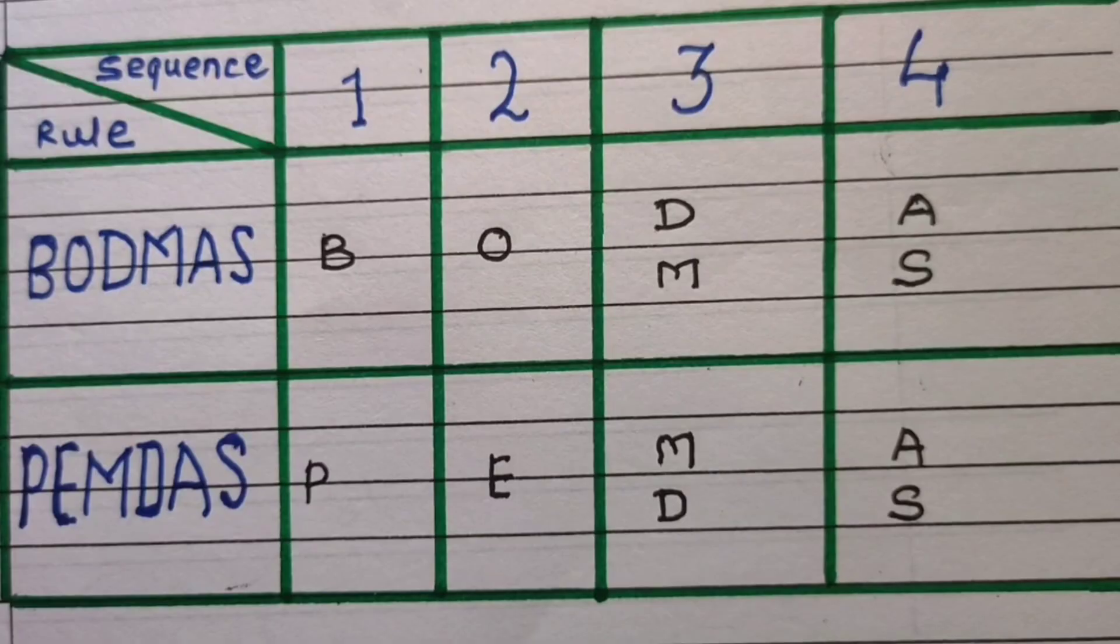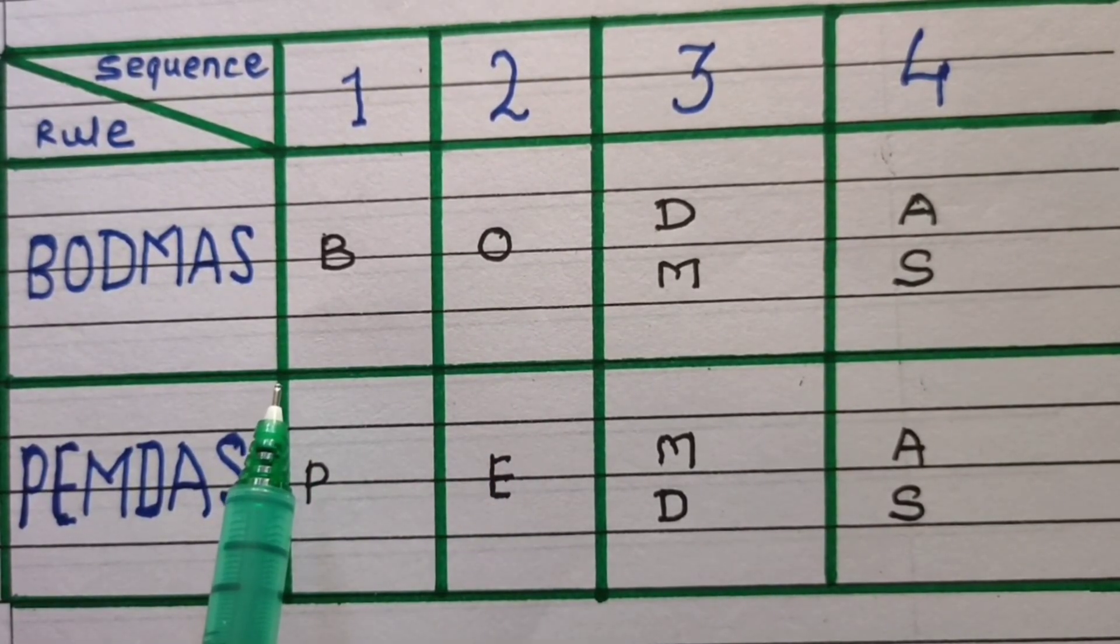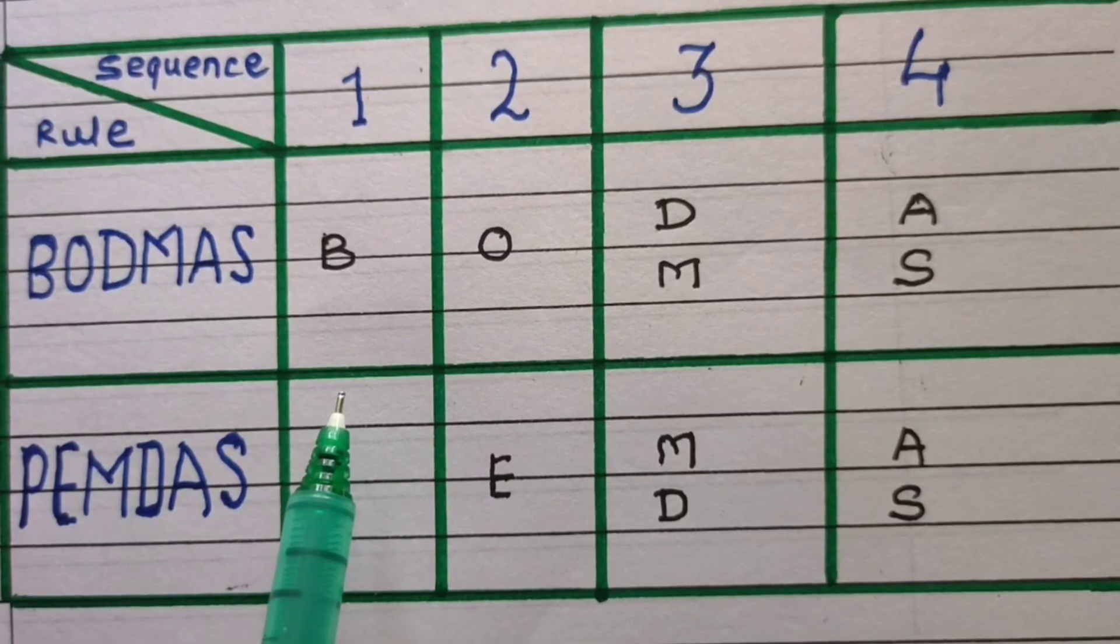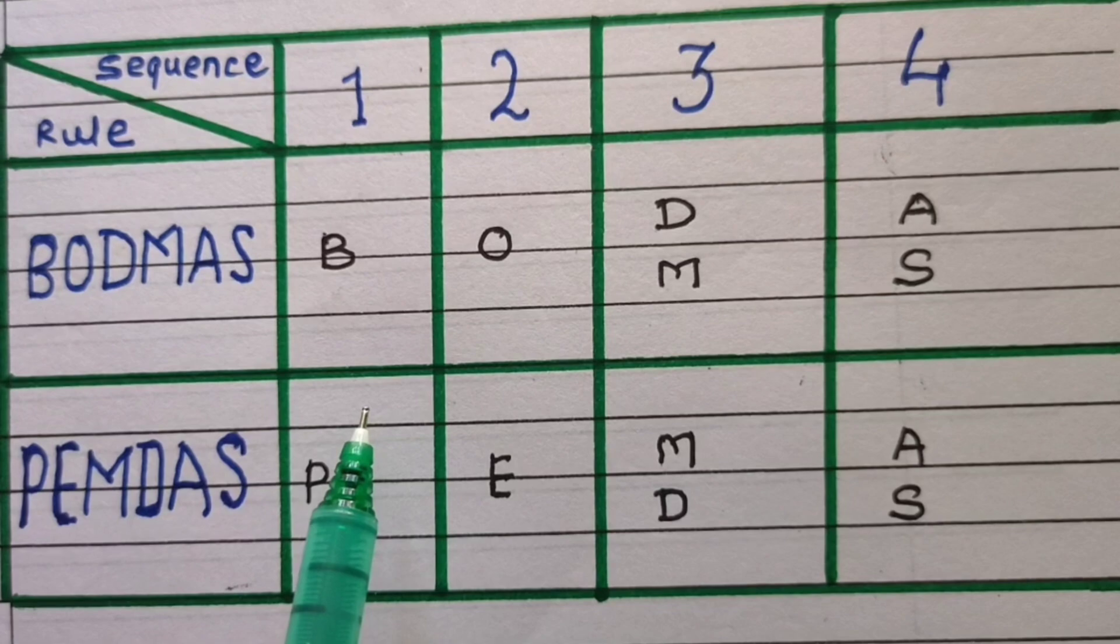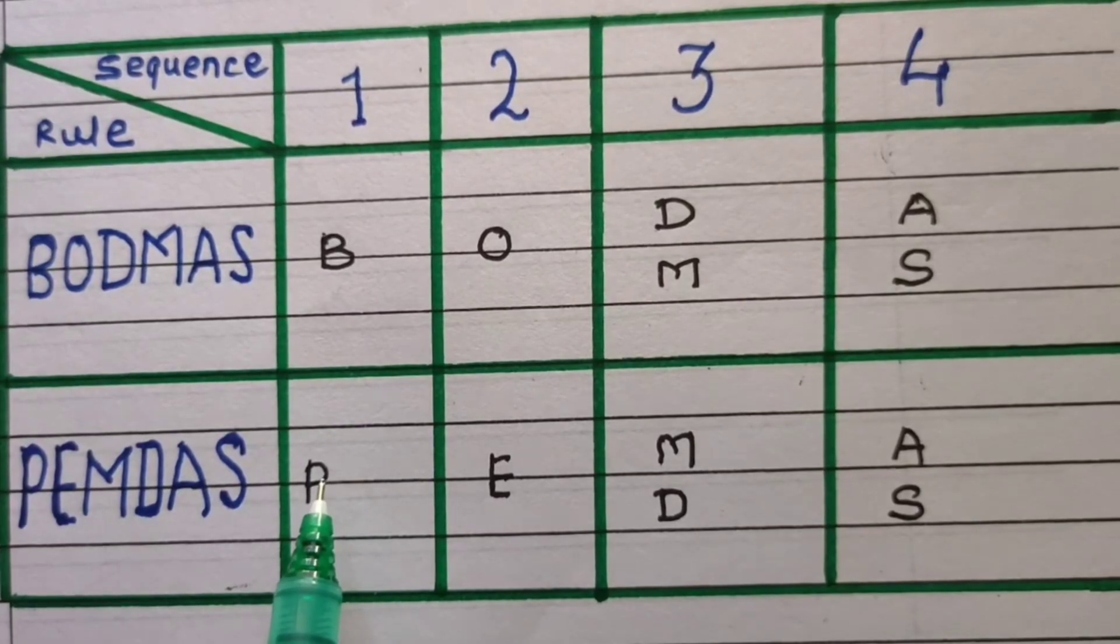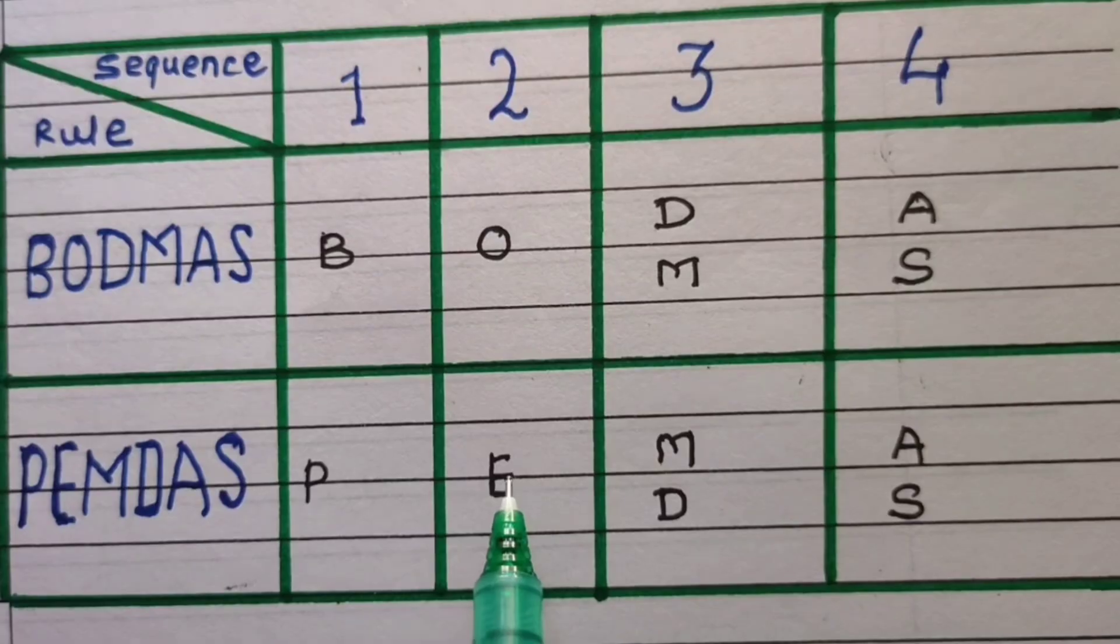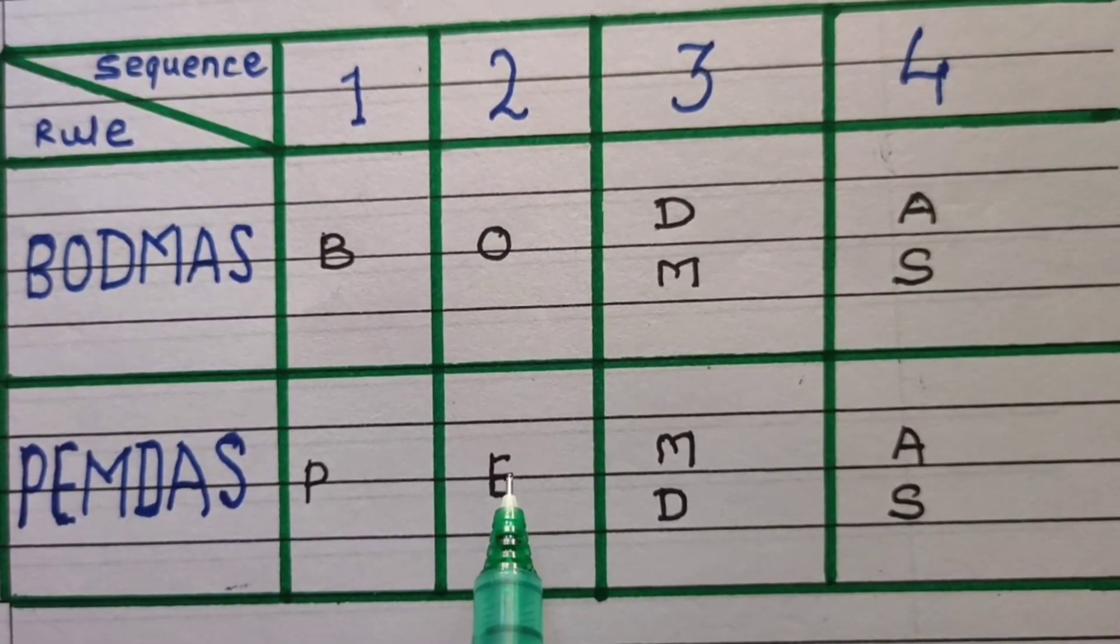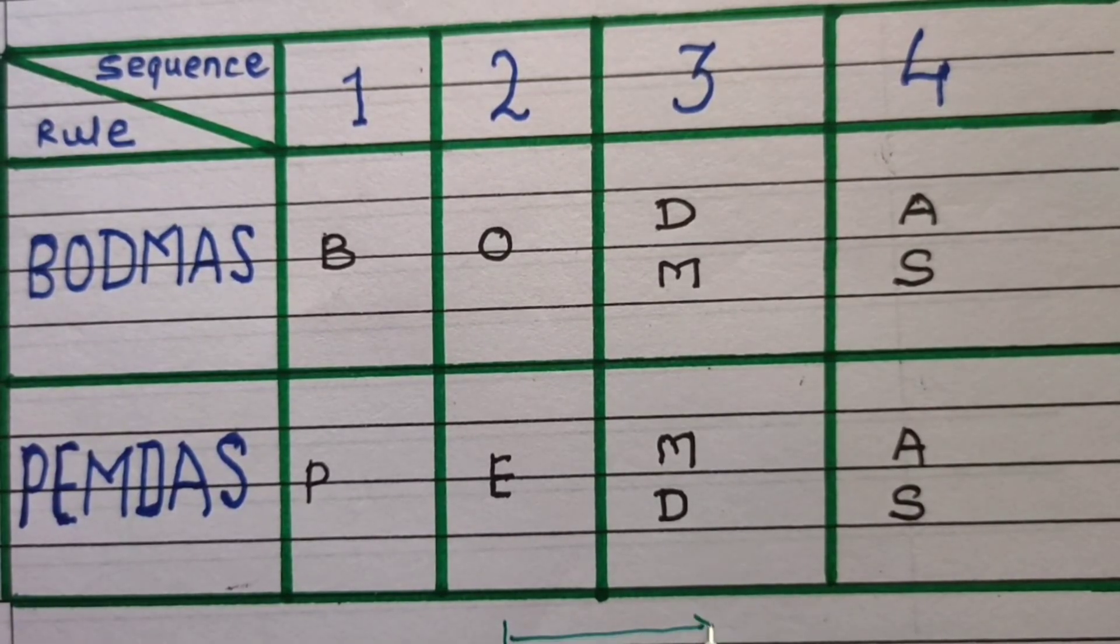Now let us know about similarities of these two rules. Both acronyms represent the exact same order of operations. The only difference is in the specific words used for two steps: brackets versus parenthesis and orders versus exponents. Both rules emphasize performing multiplication and division from left to right.